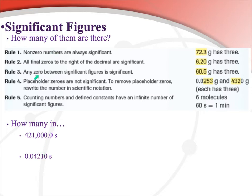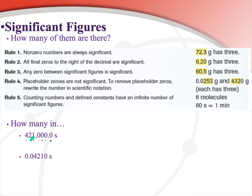Now, 421,000.0 — the 4, 2, and 1 count based on rule one. By rule two, the zero after the decimal ends the number, so it counts. By rule three, the three zeros between the 1 and that final zero are between significant figures, so all three of those count as well. Every number in 421,000.0 is significant — that gives seven significant figures.